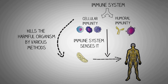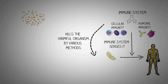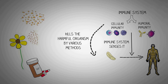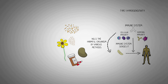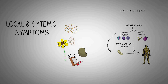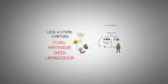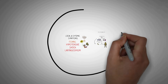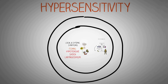Although it normally defends us against infections, our immune system can get excessively sensitive against non-harmful things like dust, pollen, medicines and many food substances. This excessive activity of our immune system leads to local and systemic symptoms that can range from harmless itching to severe conditions like hypotensive shock and laryngospasm. This excessive activity of our immune system to seemingly non-harmful antigens is known as hypersensitivity.